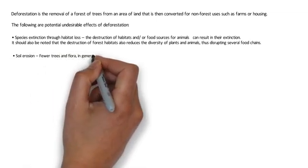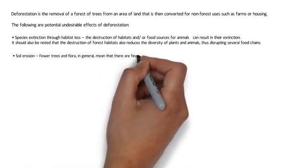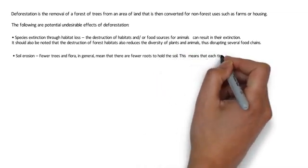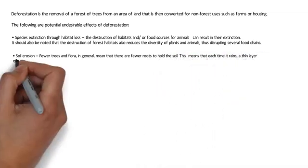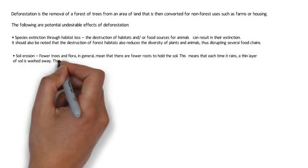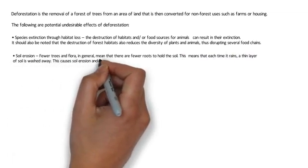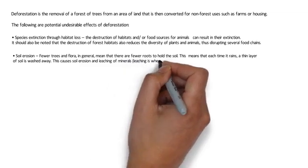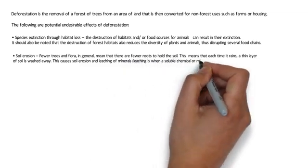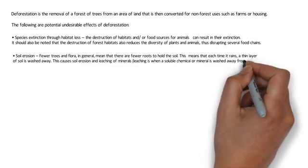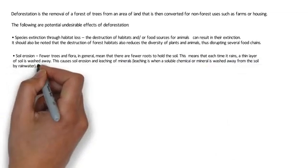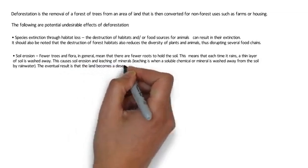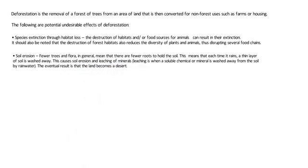Soil erosion. Fewer trees and flora in general mean that there are fewer roots to hold the soil. This means that each time it rains, a thin layer of soil is washed away, causing soil erosion and leaching of minerals. Leaching is when a soluble chemical or mineral is washed away from the soil by rainwater. The eventual result is that the land becomes a desert.